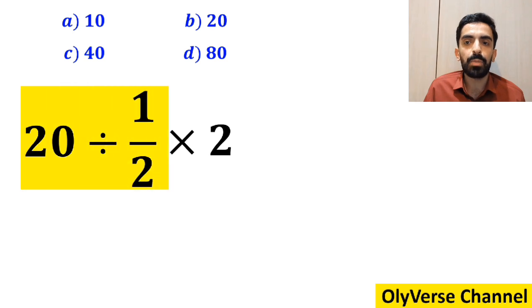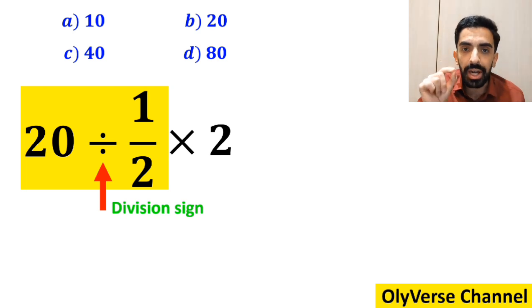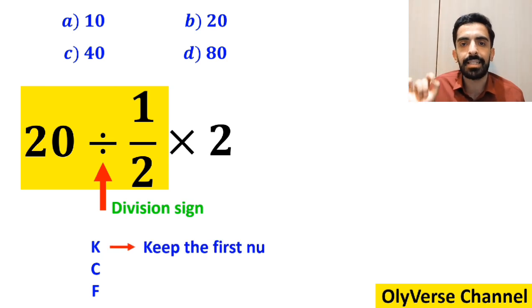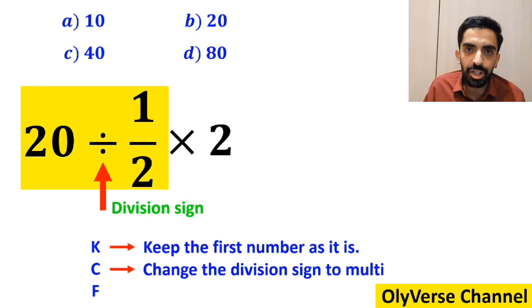So first we start with the expression 20 divided by 1 over 2. Whenever we see a division sign between two terms, the best thing to do is to apply the KCF rule. In this rule, K means keep the first number as it is, C means change the division sign to multiplication, and F means flip the second fraction.